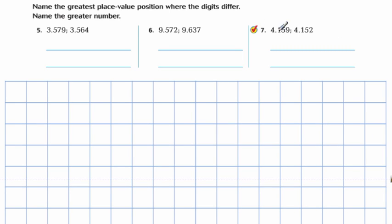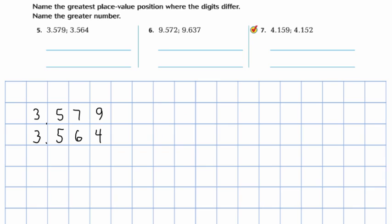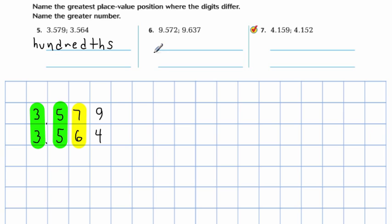For the next section, there are two things to do: name which number is greater, but also name the greatest place value where the digits differ. We're going to do the same thing, and the skill is almost exactly the same. You have 3.579 and 3.564. Putting those on paper: 3.579, the ones place is the three, then 3.564. Comparing: ones place is the same, tenths place is the same. Where do they differ? Here in the hundredths place. Naming the greatest place value where the digits differ: they differ in the hundredths place, so you write hundredths.